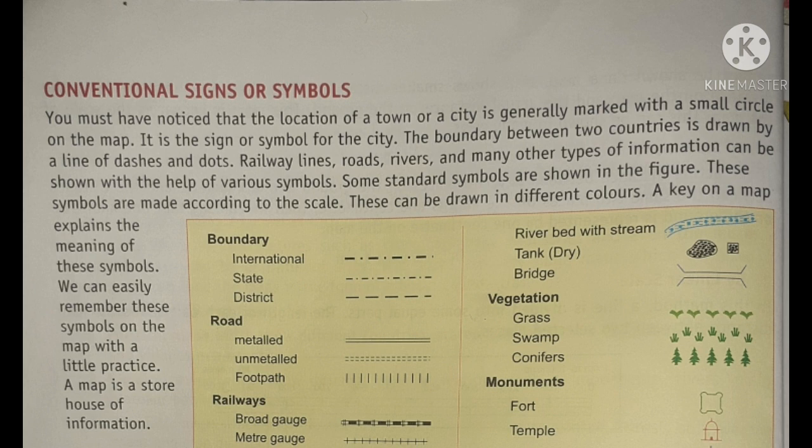Conventional signs or symbols. The location of a town or city is generally marked with a small circle on the map — it is the sign or symbol for the city. The boundary between two countries is drawn by a line of dashes and dots. Railway lines, roads, rivers and many other types of information can be shown with the help of various symbols. Some standard symbols are shown in the figure. These symbols are made according to the scale and can be drawn in different colors. A key on a map explains the meaning of these symbols. We can easily remember these symbols with a little practice.